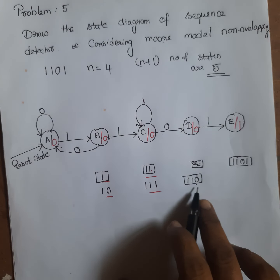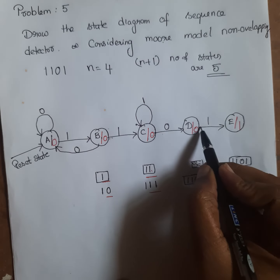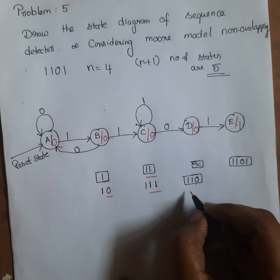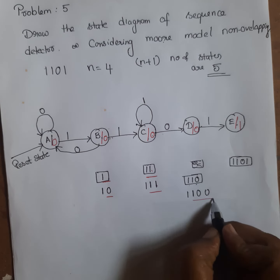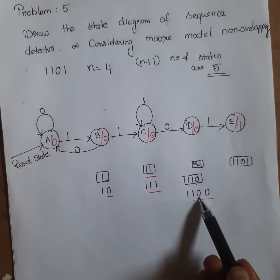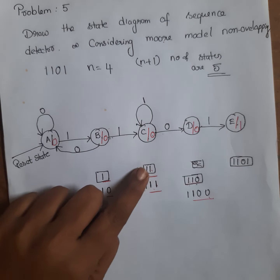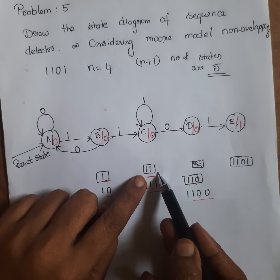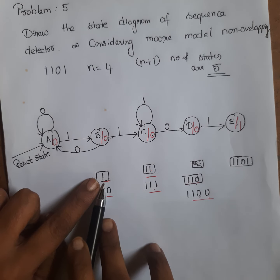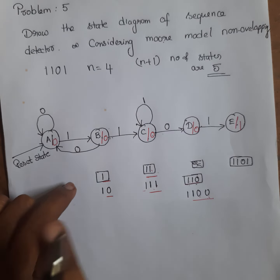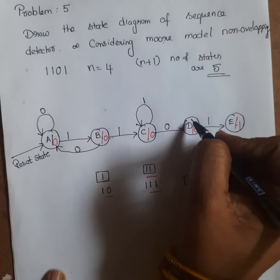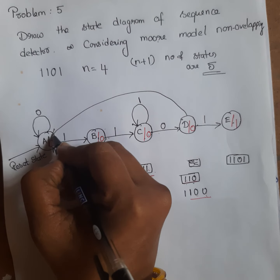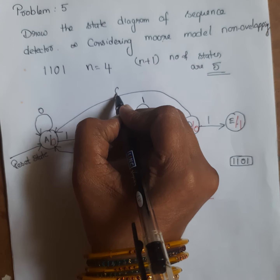For state D, the bits detected are 1, 1, 0. When the input is 1, it goes to state E. For input 0, compare 3 bits: 1, 1, 0 with 1, 1, 0 — no match — wait, then check: compare 1, 1, 0 with 1, 0, 0 — no match. Go to the previous state and compare 2 bits: 0, 0 with 1, 1 — no match. Go back further and check the last 1 bit: compare 0 with 1 — no match. If there is no match with any state, go to the reset state. So D goes to A for input 0.